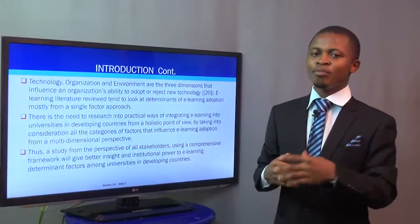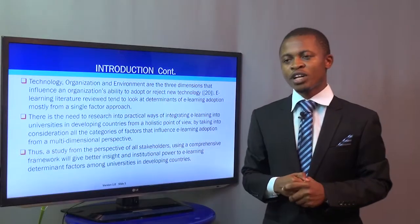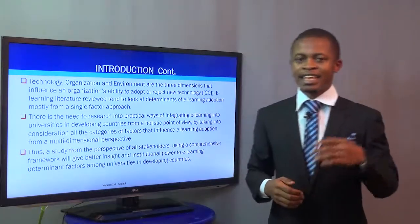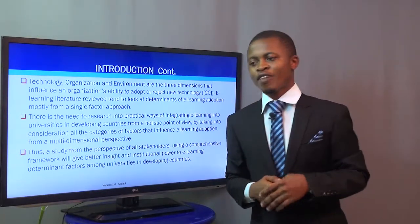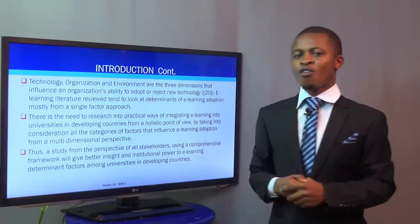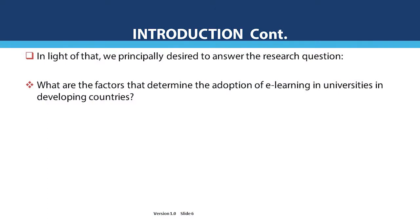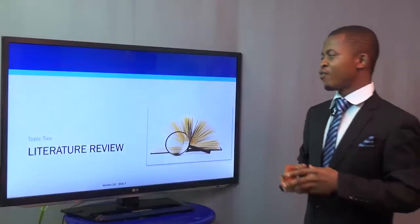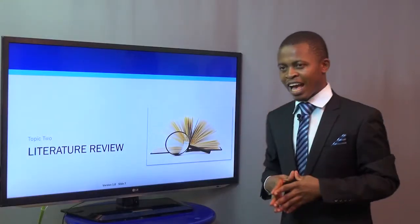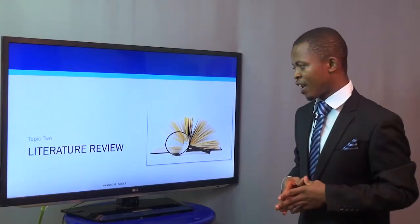That is, taking the three major stakeholders of the e-learning systems and then the three major factors of adoption. In light of that, our research principally tried to answer this question: what are the factors that determine the adoption of e-learning in universities in developing countries, with a focus on Ghana and the University of Ghana?